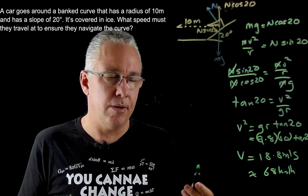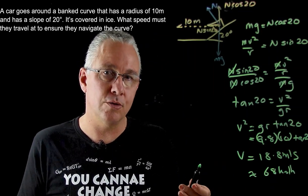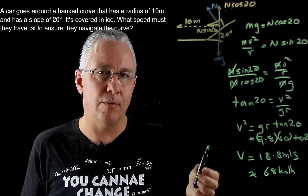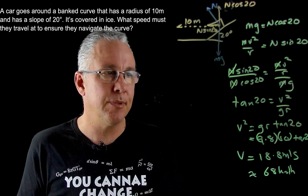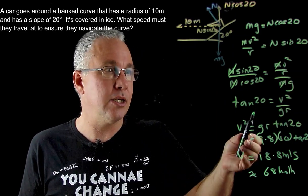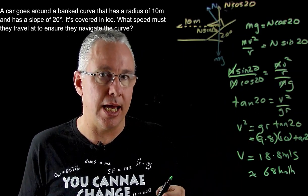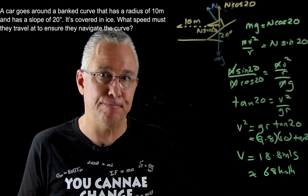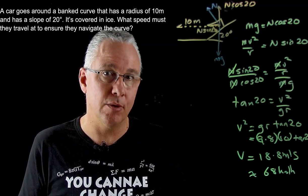So if the car wants to travel at a higher speed you can see straight away in our relationship that requires a larger radius. Or in our case it could also require a larger angle to work to go around that curve at 10 meters. So there you have a banked question.